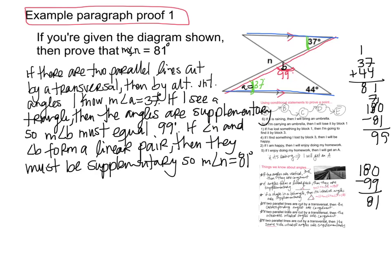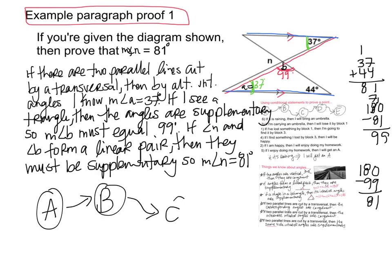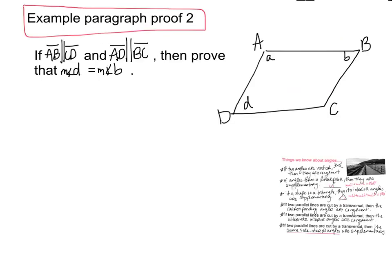Your paragraph proof should be unique to you because you have unique thoughts and a unique way of talking. Even right now, if I gave you this proof you'd probably write it a little differently because of the way I think compared to you. The most important thing to remember is that it has to have logical flow — clearly showing how A connects to B to C to D. In mine you can see that, and in yours you should too. Alright, we're down to our last proof, so take a deep breath — here we go.